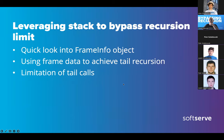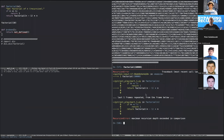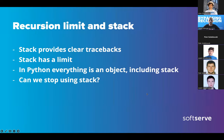Something called a recursion limit is not allowing us to run any deeper. This happens because CPython uses a stack. A stack is a very old and well-tested solution for calling functions, getting their arguments - it's there when you write programs in assembler or C.